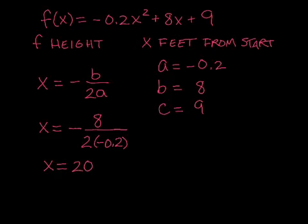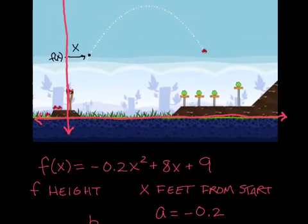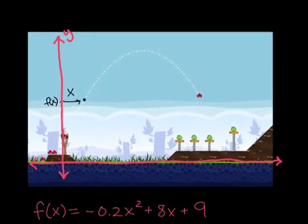So going back up to my original problem for a second, the drawing that we have here, we know that when we get to this vertex, this maximum part here, we have traveled a horizontal distance of 20 feet. That's what the x represents in the problem.